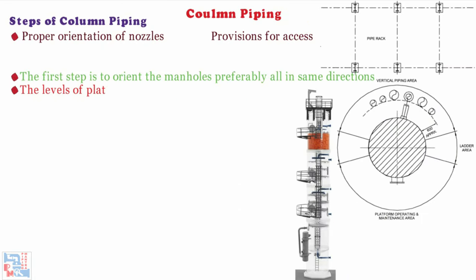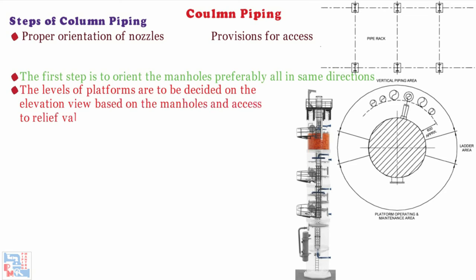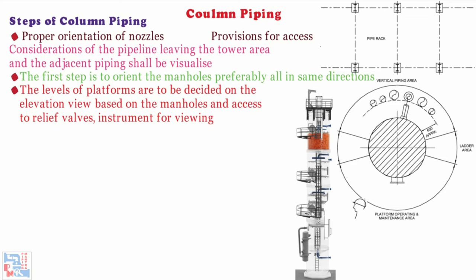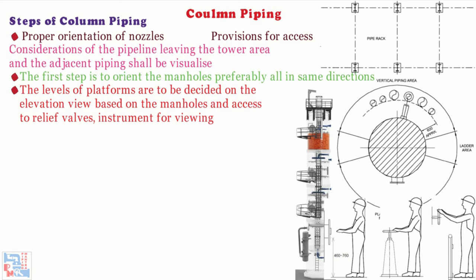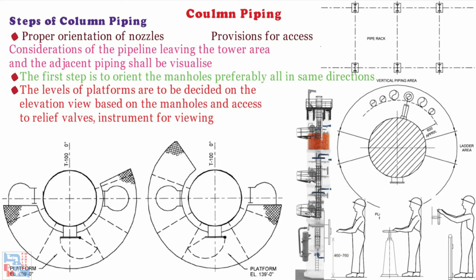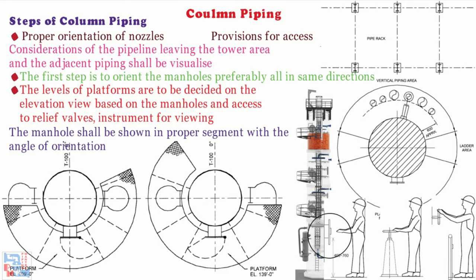The levels of platforms are to be decided on the elevation view based on the manholes and access to relief valves instruments for viewing. All platform levels in the proper segment of the tower with ladder location should be drawn on the plan view. The manhole shall be shown in proper segment with the angle of orientation and the space for the swing of manhole cover taking davit hinge as center.